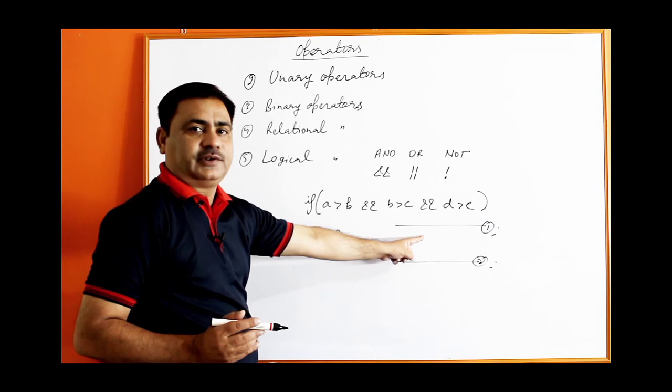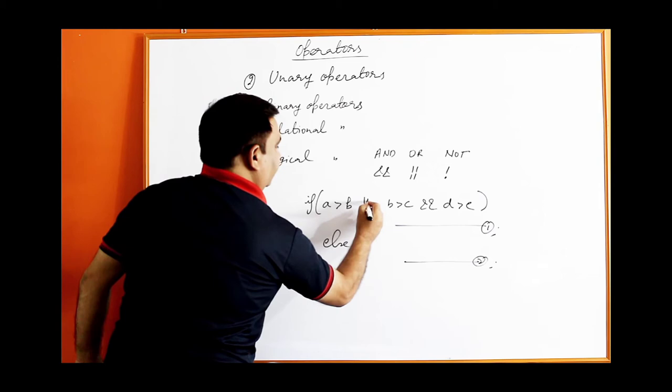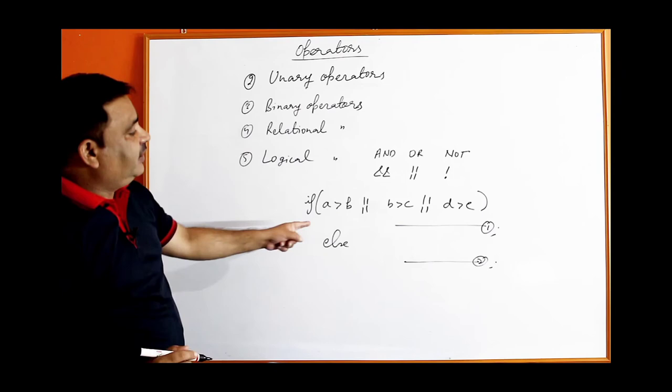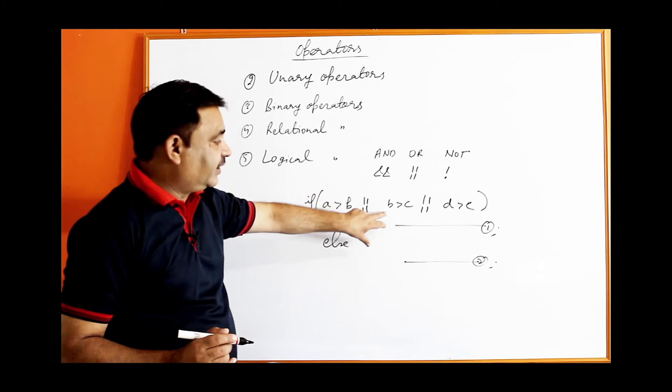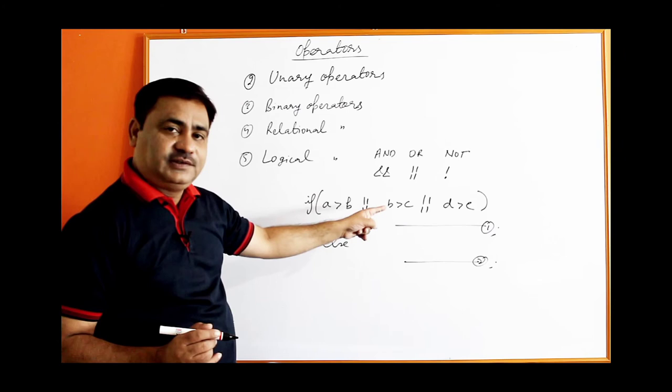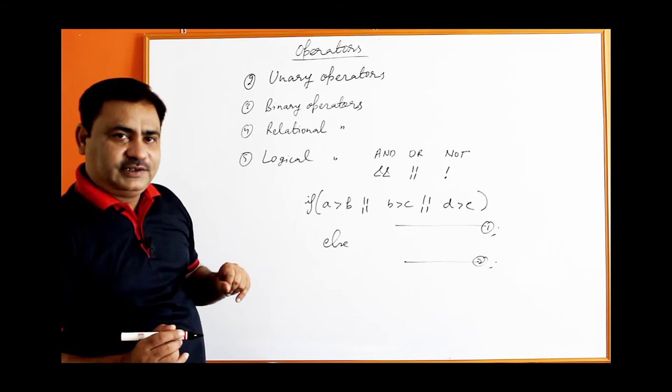With the OR operator, if any one condition is true the first statement executes. For example, if a is not greater than b but b is greater than c, then one condition being true is enough — the first statement executes. Only if all conditions are false will the else block execute. That is the difference between AND and OR operators.